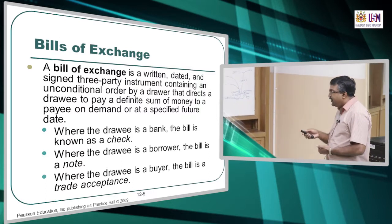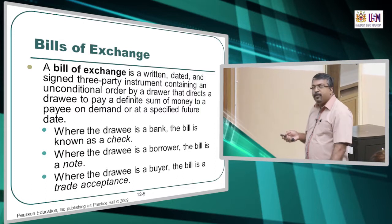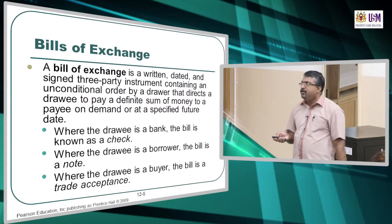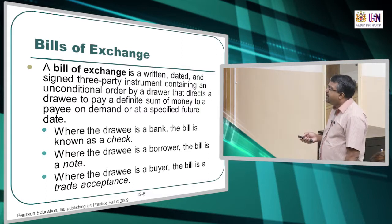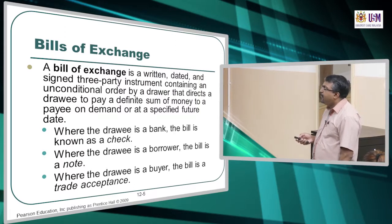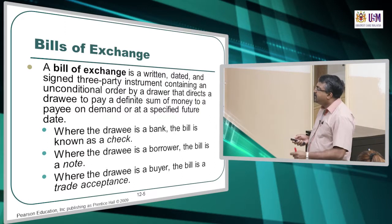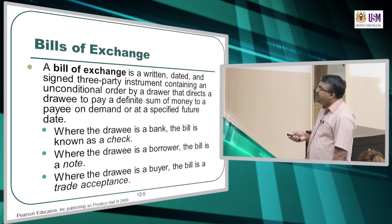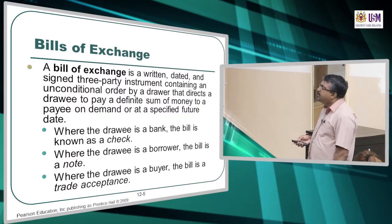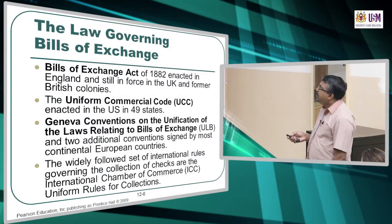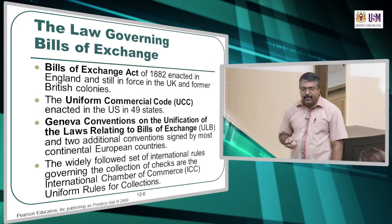A bill of exchange is a written document that is dated — sometimes a future date, sometimes a current date — and signed by the parties, containing an unconditional order. That means there is no condition; just pay. We call it an unconditional order. The drawer, meaning the person that buys the product, directs the drawee — which can be a bank, a borrower, or a buyer — to pay a definite sum of money based on the value of the product on a specified future date.